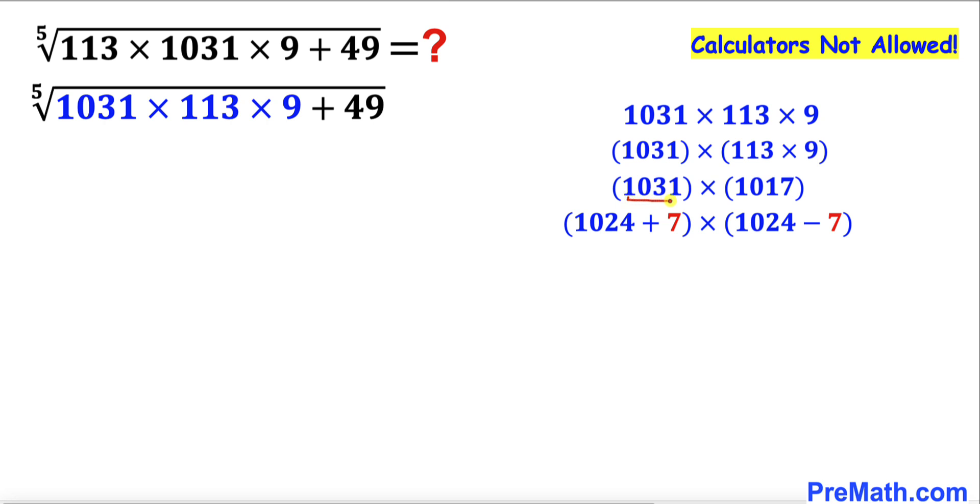Now let's tweak these numbers carefully. We can see that 1031 could be written as 1024 plus 7, whereas 1017 could be written as 1024 minus 7. Let's recall this famous identity: (a + b)(a - b) can be written as the difference of two squares. Seven squared is 49.